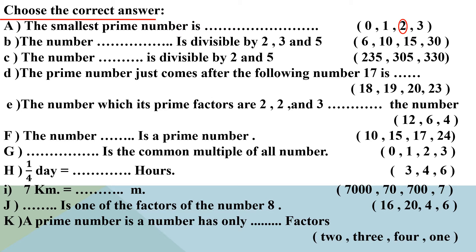Is 10 divisible by 3? No. Take 15 — yes, 15 is divisible by 3, and 15 is divisible by 5, but 15 is an odd number, not divisible by 2. Take 30 — yes, 30 is divisible by 2 because 30 is an even number. Also 30 ÷ 3 = 10, and 30 ÷ 5 = 6, and the units digit is 0. So the number 30 is divisible by 2, 3, and 5. Any number is divisible by another if the remainder of the division is 0.